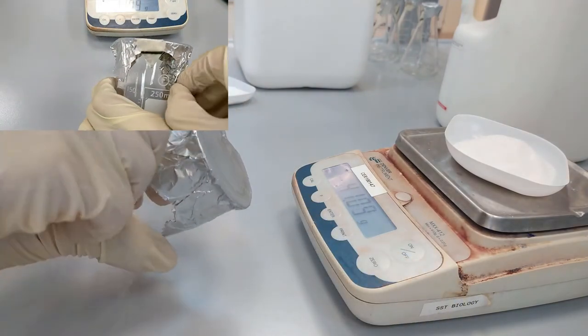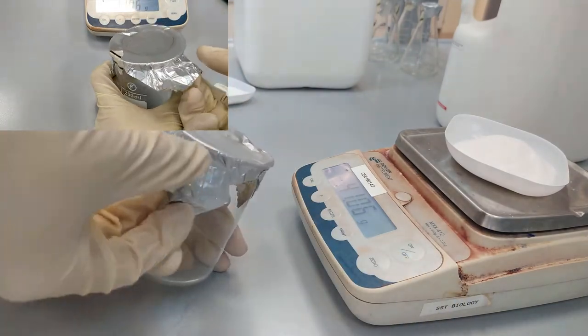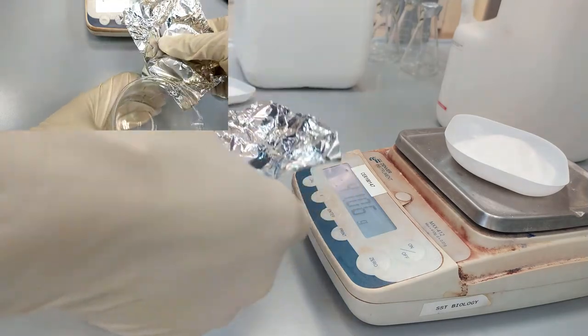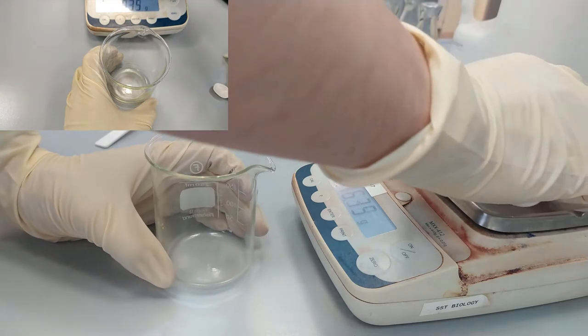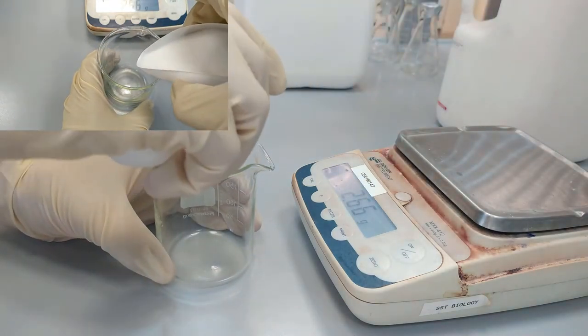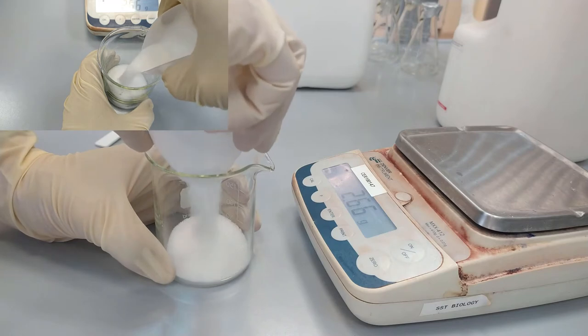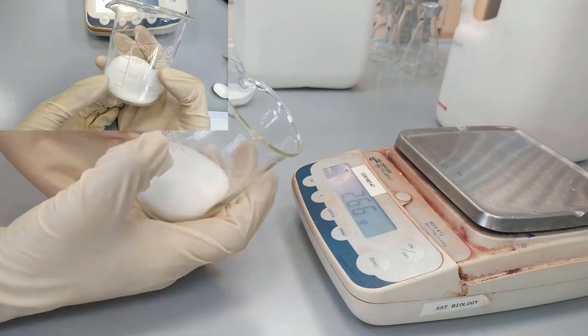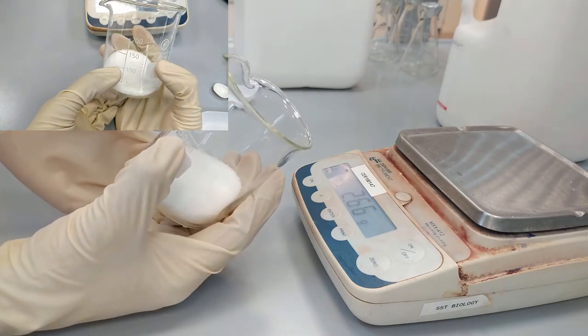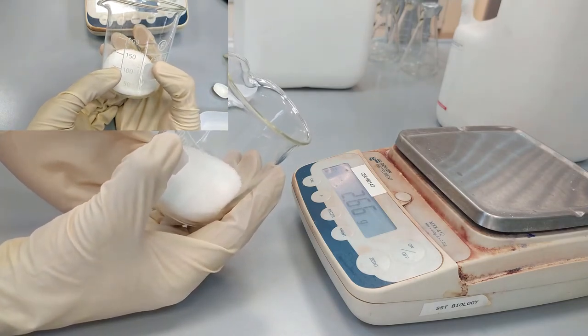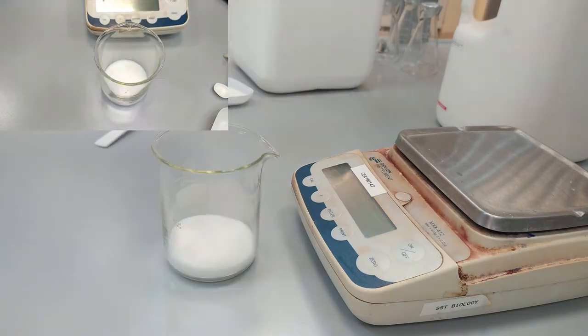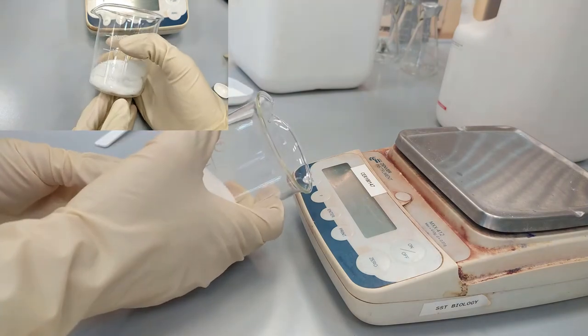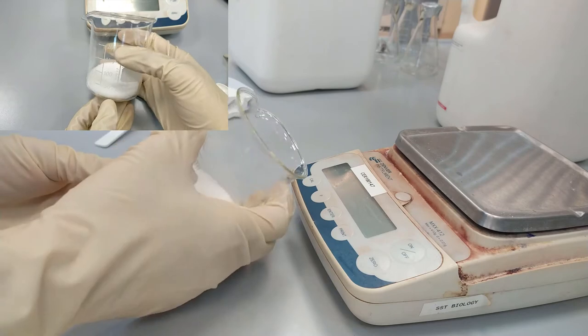As you can see here, we take 250 milliliter beaker, put all glucose inside, and then add to the volume of 100.